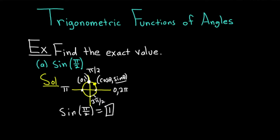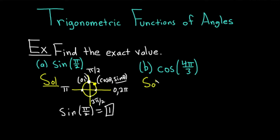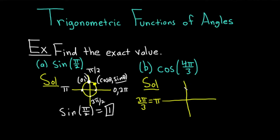Part B: we have to find the exact value of the cosine of 4 pi over 3. This one's a lot more challenging. The first step is to think about where 4 pi over 3 is on the unit circle. You can think of pi as 3 pi over 3, and since we have 4 pi over 3, that's pi over 3 more than 3 pi over 3. So the angle 4 pi over 3, drawn here in white, is located just past the negative x-axis into the third quadrant.